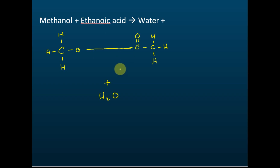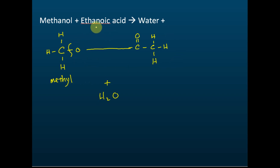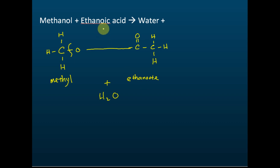The name of the ester depends on what alcohol and carboxylic acid we use. If we use methanol, this part of the ester is called methyl. And this part, which is from the carboxylic acid — the ethanoic acid — is called ethanoate. So the name of this ester is methyl ethanoate. The methyl comes from methanol and the ethanoate comes from ethanoic acid. Therefore, the ester produced is methyl ethanoate.